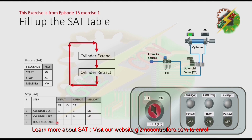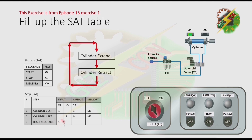Lastly, what is the requirement to reset the sequence? The requirement is that the cylinder must go back to its initial position, which is the retracted position. We need to put m3 here. We have now filled up the table.